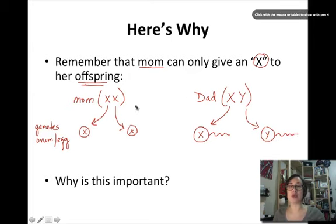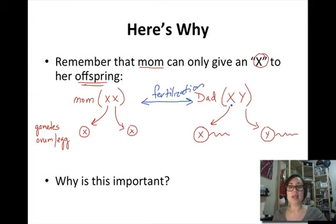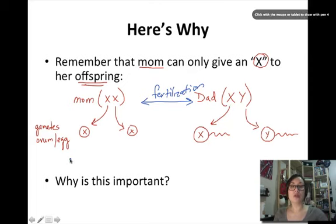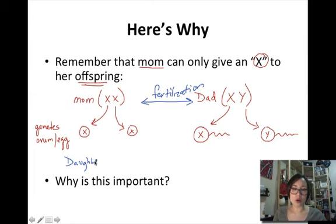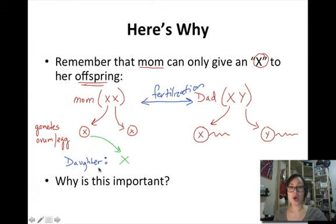This becomes significant when these two parents participate in a fertilization event. If they want to make a daughter, mom can only ever give an X. To get a daughter, we need the XX combination, so dad has to also give an X. But if they wanted to make a son, dad has to give a Y. It's the males that actually control the sex of the child because moms can only ever give X's.